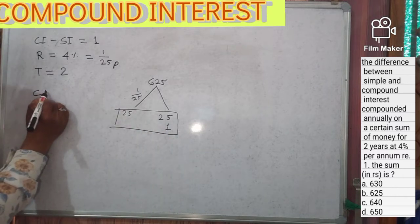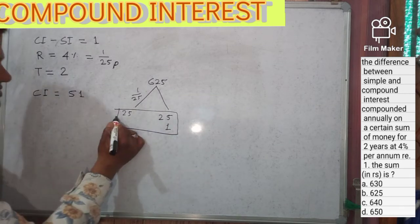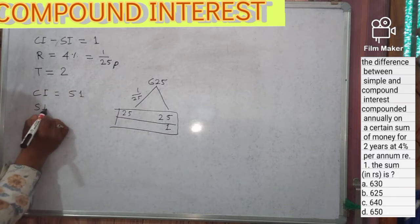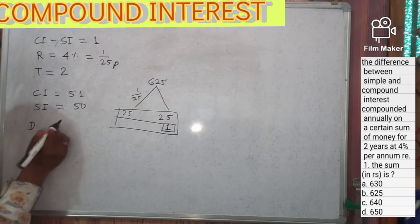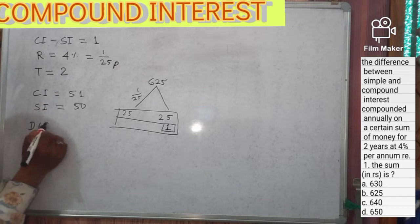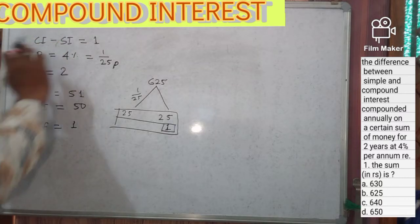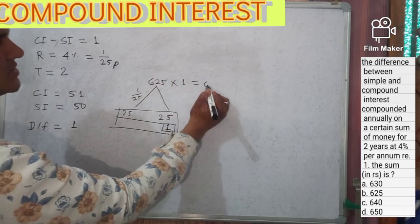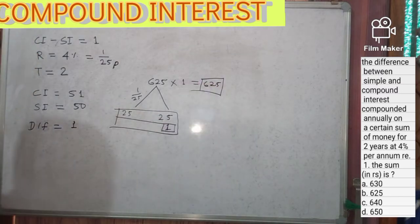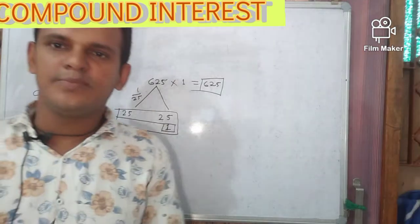Total compound interest is 25 plus 25 plus 1, which equals 51. Simple interest is just 25 plus 25, equal to 50. The difference is 51 minus 50, which equals one. According to the question, the difference equals one, and our principle is 625. Multiplying by one gives 625, so the answer is Rs 625. Option B is correct.